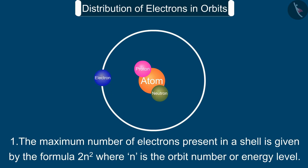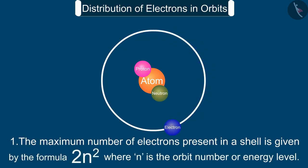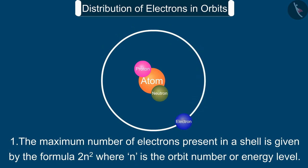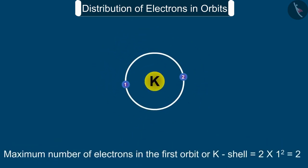The maximum number of electrons present in a shell is given by the formula 2n², where n is the orbit number or energy level. Therefore, the maximum number of electrons in the first orbit or K shell is equal to 2 into 1 square, that is 2.